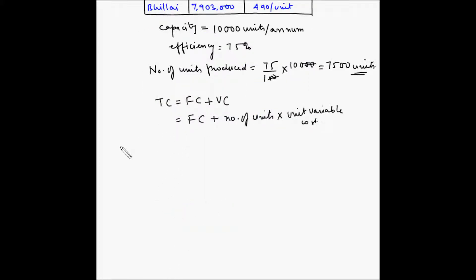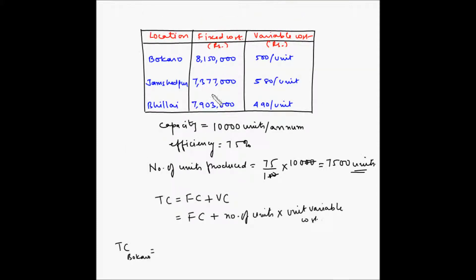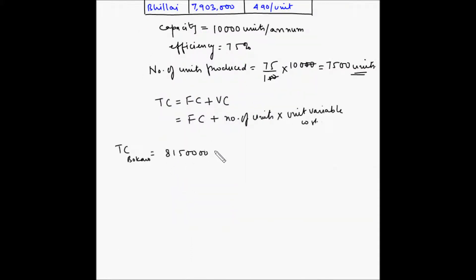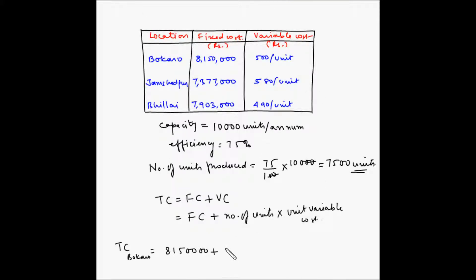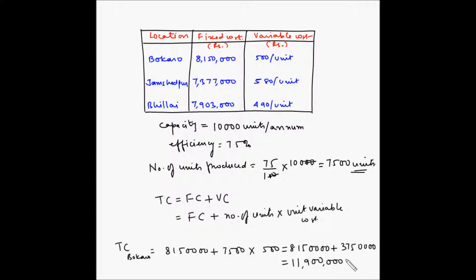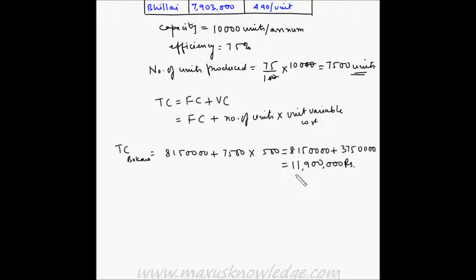The total cost for Bokaro is equal to the fixed cost of rupees 8,150,000 plus the number of units (7,500) multiplied by the unit variable cost of rupees 500. This equals 8,150,000 plus 3,750,000, which equals rupees 11,900,000. This is the total cost of production at Bokaro.